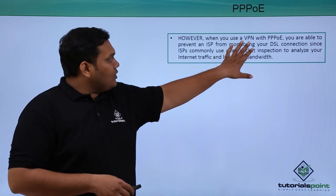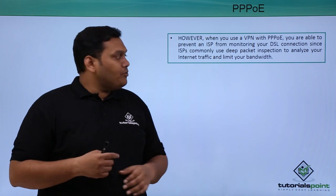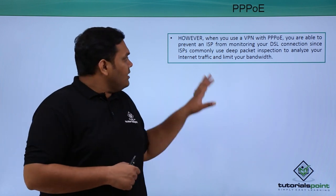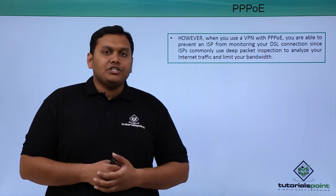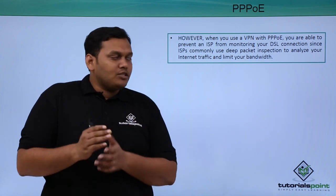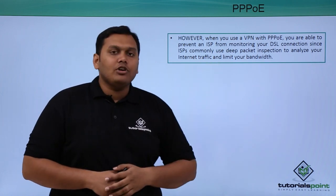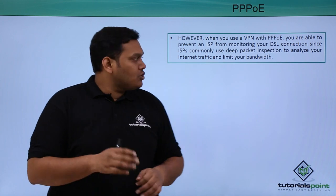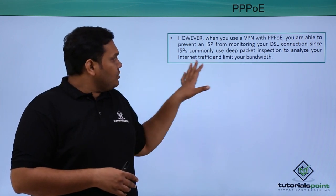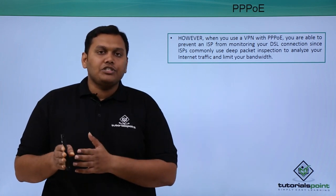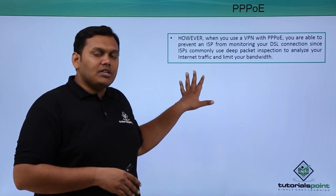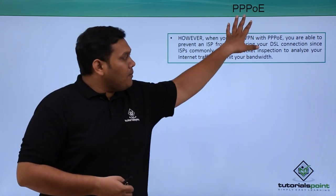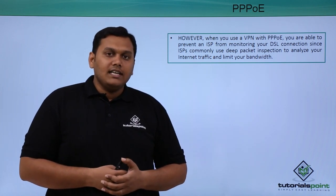Using a VPN with PPPoE can prevent an ISP from monitoring your DSL connection. However, ISPs commonly use deep packet inspection to analyze internet traffic and limit bandwidth. Based on this, the Fair Usage Plan is categorized — when internet traffic is high, you may get more or less speed accordingly. This concludes the overview of PPPoE, Point-to-Point Protocol over Ethernet.